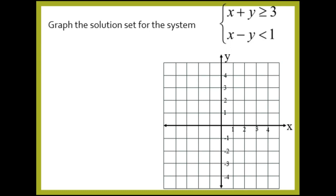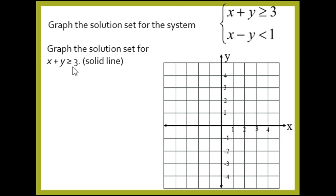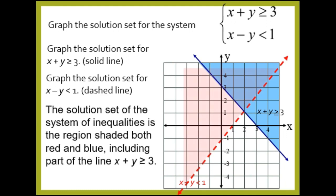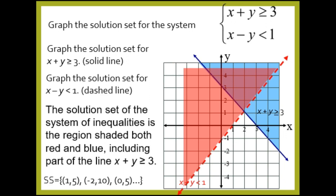Now let's try: graph the solution set for the system x + y ≥ 3 and x − y < 1. For x + y ≥ 3, this is a solid line because of the greater than or equal to symbol. Using test point (0, 0), the shaded part is above the line. For x − y < 1, we use a dashed line because of the less than symbol. Using test point (0, 0), the shaded part is also above the line. The solution set is the region shaded both red and blue, including part of the line x + y ≥ 3, with points such as (1, 5), (−2, 10), (0, 5), and so on.